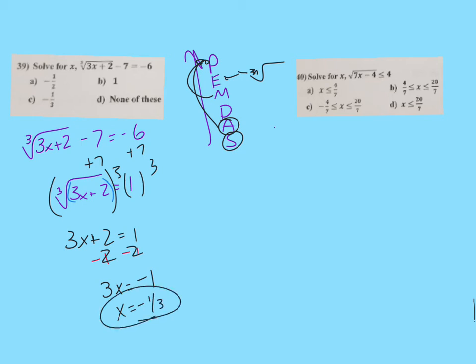With radicals, you do have to plug that in and make sure it works. I do plug it in, and it does work just fine. So negative 1 third, I plug it in. So I plug in negative 1 third right there. I get negative 1. Negative 3 plus 2 is negative 1. So let me double check. So we have the cube root, 3, instead of x, I'm going to put negative 1 third, plus 2, minus 7 equals negative 6.